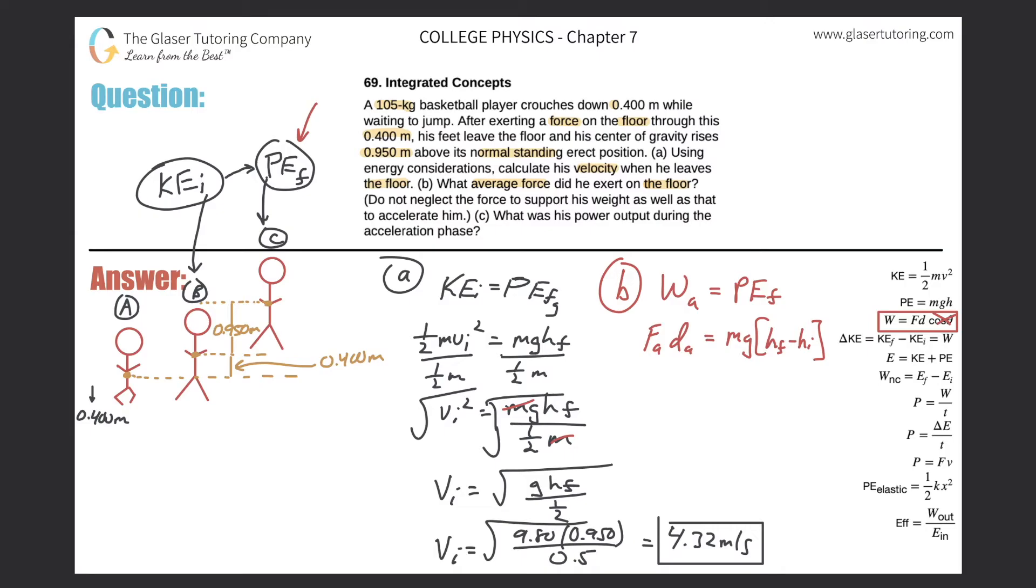We are looking for the applied force here, so basically divide out the distance he applied the force in part A. We have a nice formula here that says the applied force will be equal to his mass times gravity multiplied by the final height minus the initial height, all divided by the distance over which he applied that force.